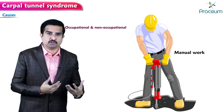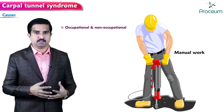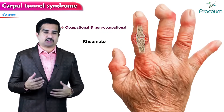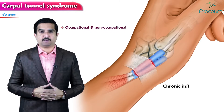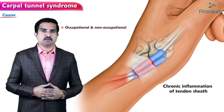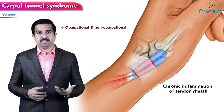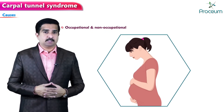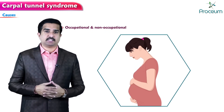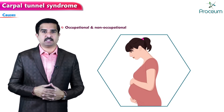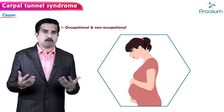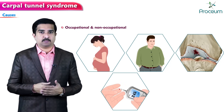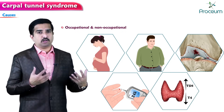There is an increased risk in workers using vibrating tools, or from prolonged forceful and repetitive flexion and extension of the wrist — these are occupational risk factors. Conditions like rheumatoid arthritis and chronic inflammation of the tendon sheaths can also cause compressive neuropathy. Other common factors include pregnancy — recent studies show CTS may affect up to 62 percent of pregnant women.